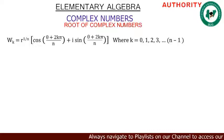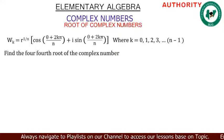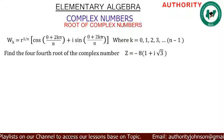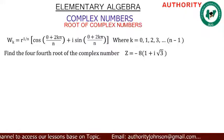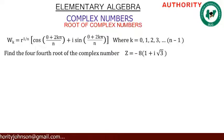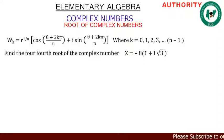Now let's use an example to explain it. Find the fourth root of the complex number z = -8(1 + i√3).